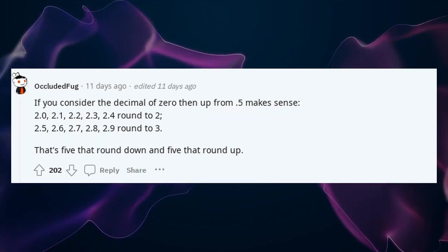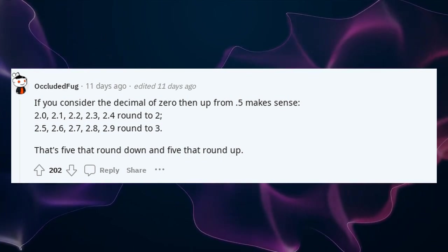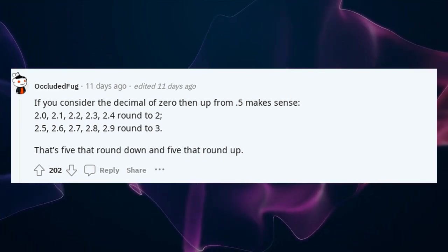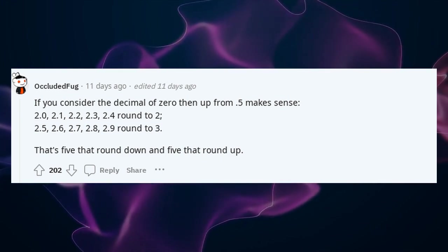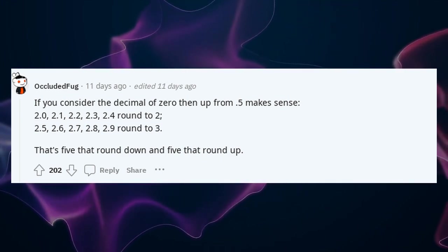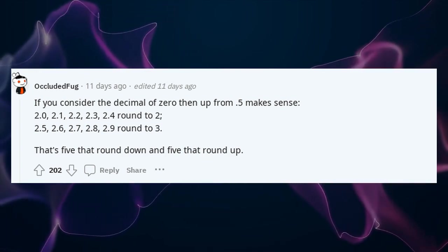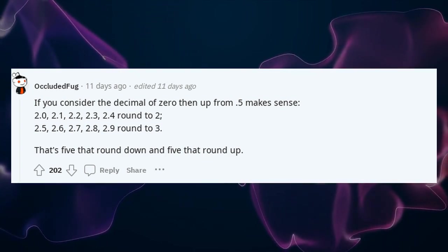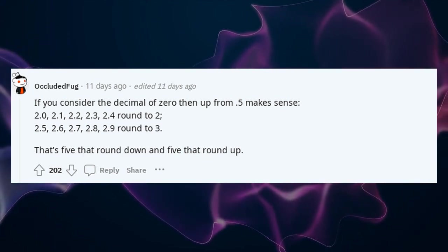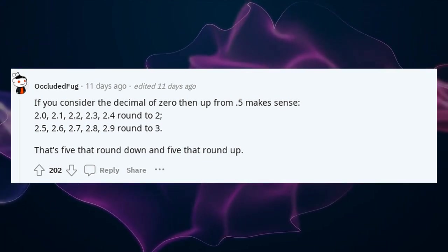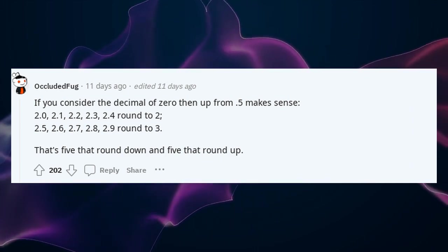If you consider the decimal 0, then rounding up from 0.5 makes sense. 2.0 through 2.4 round to 2, and 2.5 through 2.9 round to 3 — that's 5 that round down and 5 that round up.